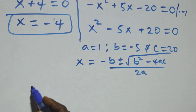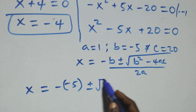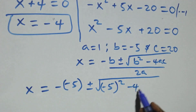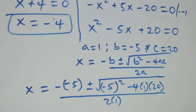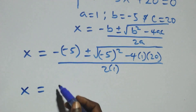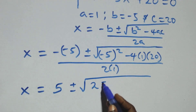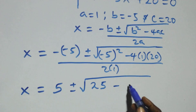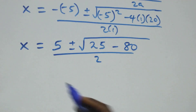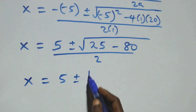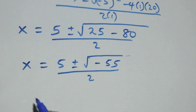Substituting, we get x equals minus of minus 5, plus or minus square root of minus 5 squared minus 4 times 1 times 20, all over 2 times 1. This becomes x equals 5 plus or minus square root of 25 minus 80, which gives x equals 5 plus or minus square root of minus 55, all over 2.